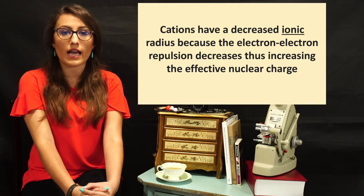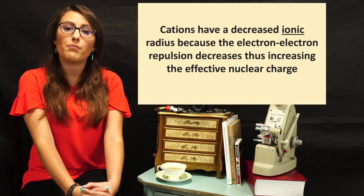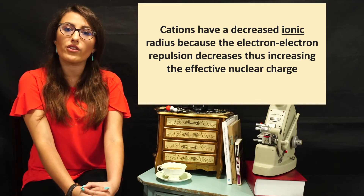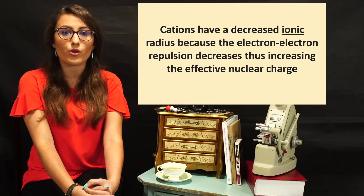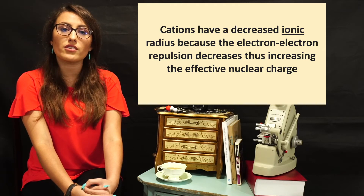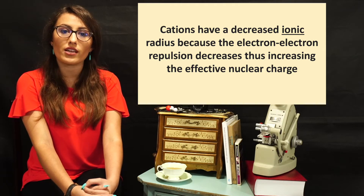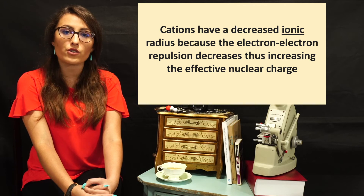Since we have talked about cations and anions, you must be wondering how the radius changes. In the case of cations, we are removing electrons. By doing so, the ionic radius decreases because the electron-electron repulsion reduces and the protons are able to bring the remaining electrons